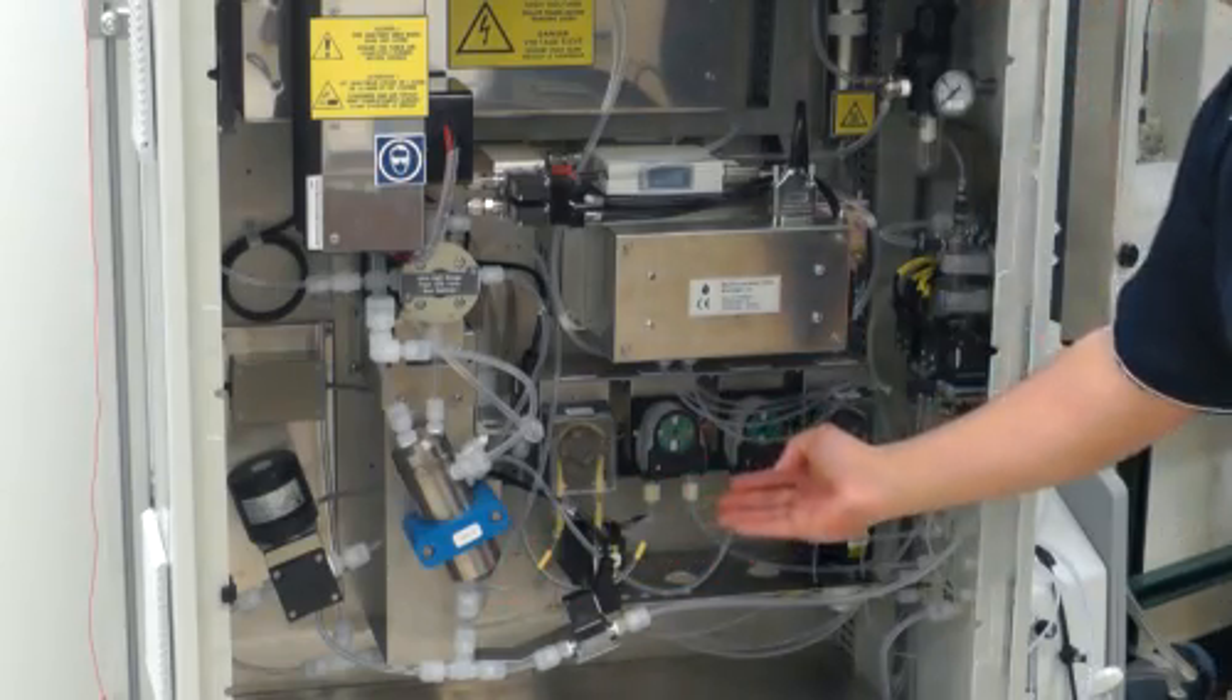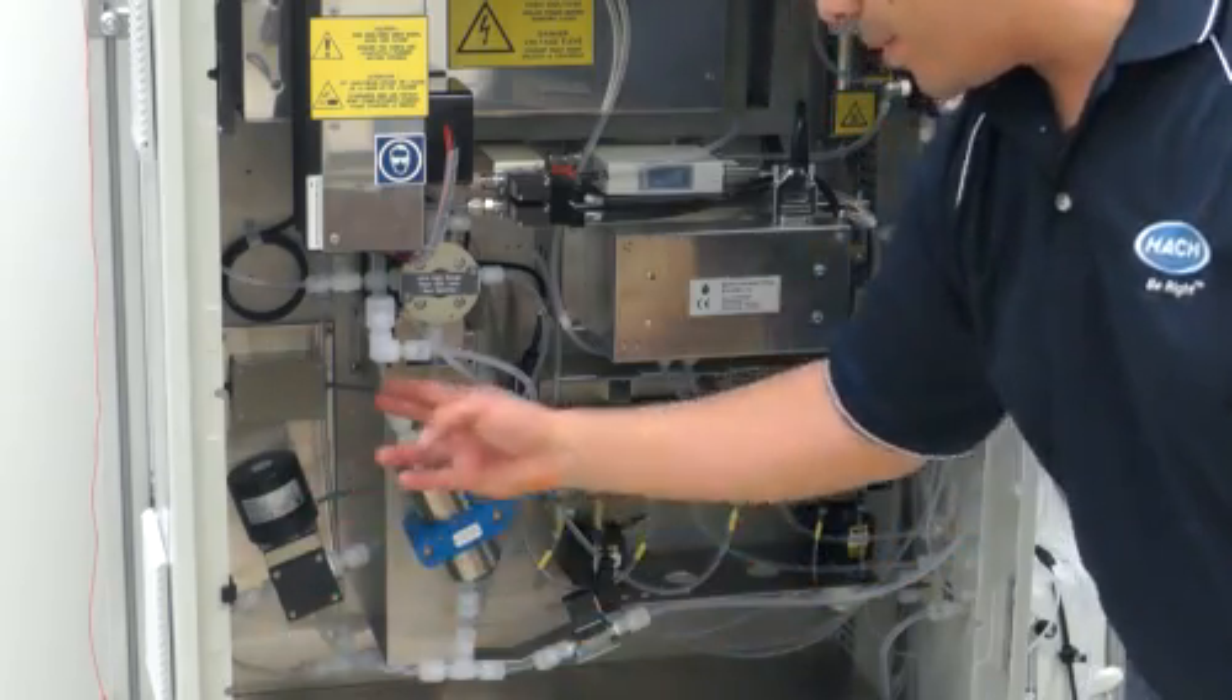The sample is pumped into this reactor, and we use an acid pump to pump the acid into the reactor. Next, we turn on this circulation pump, which circulates the acid and the sample through the reactor. The acid reacts with the total inorganic carbon in the sample and turns it into carbon dioxide.